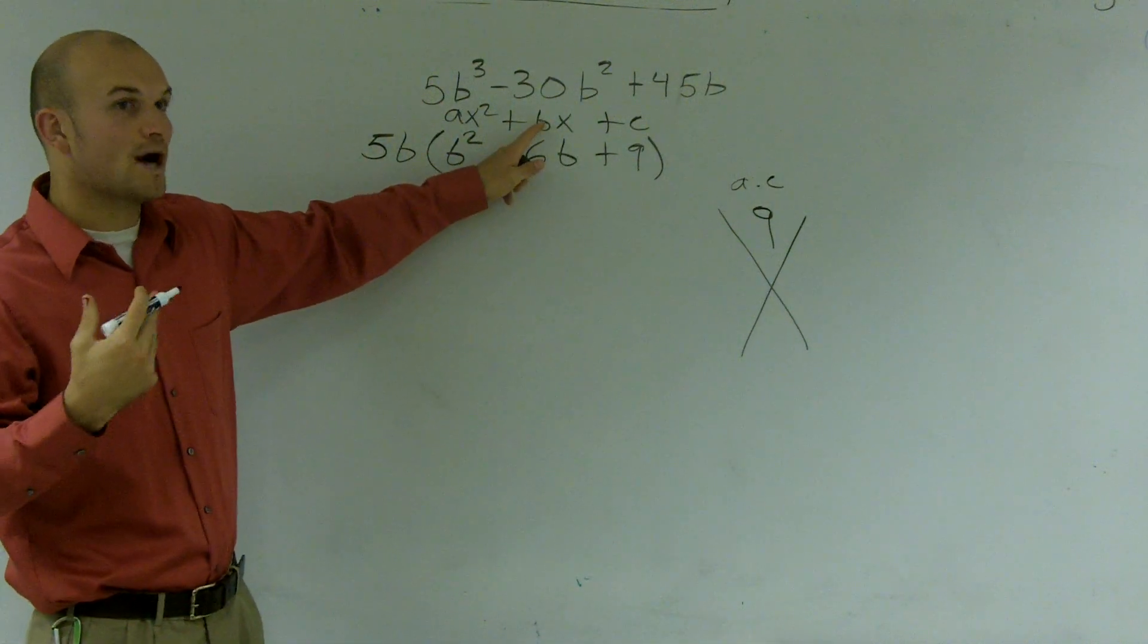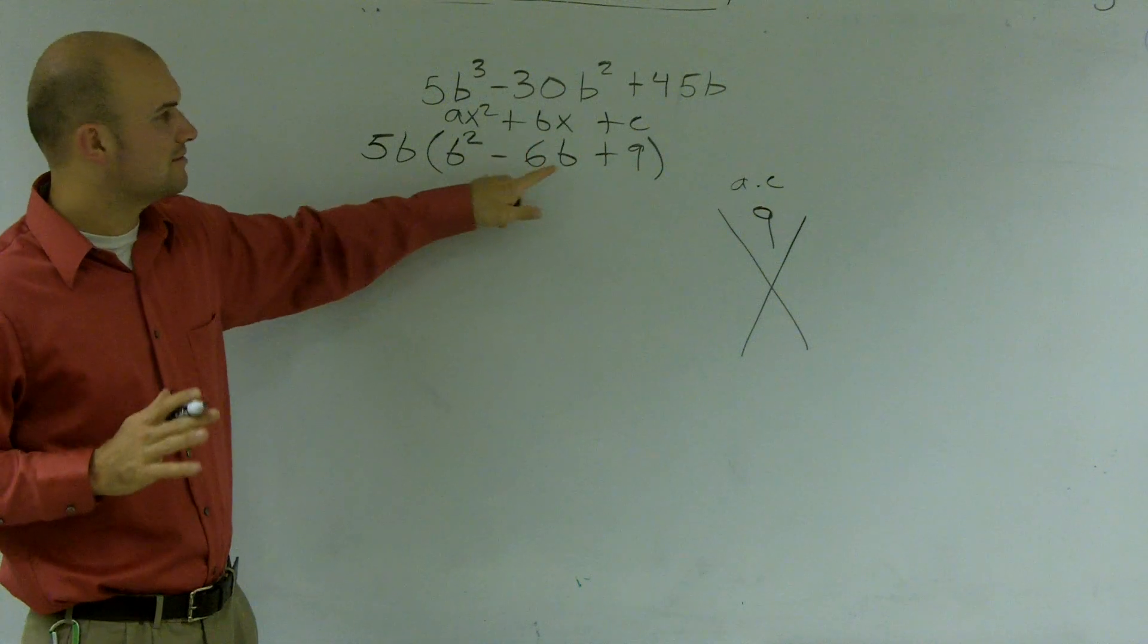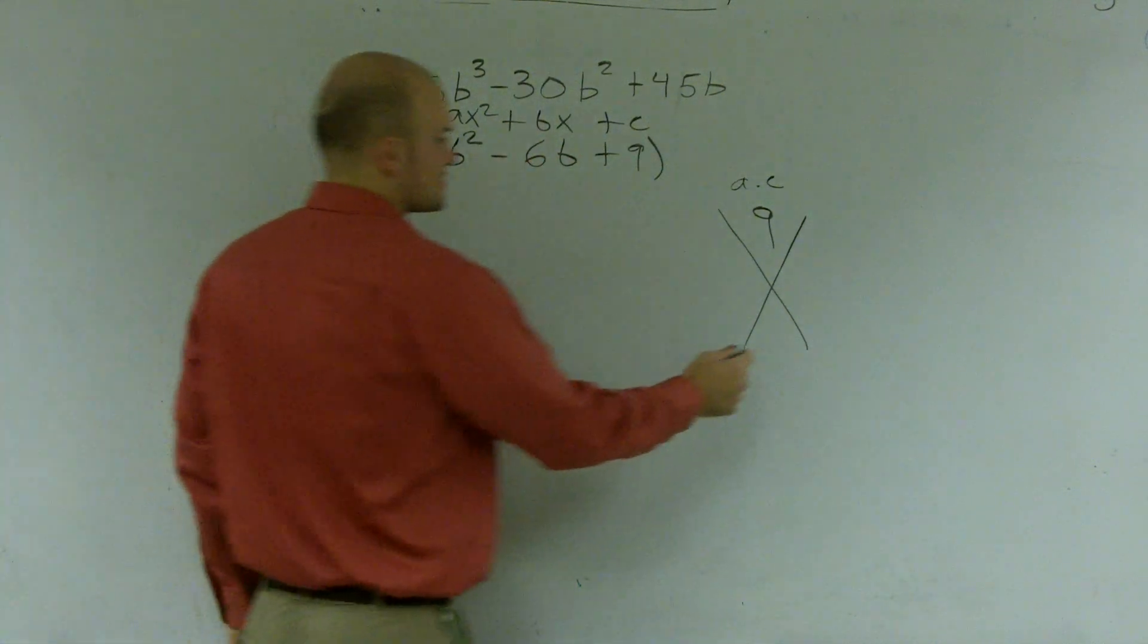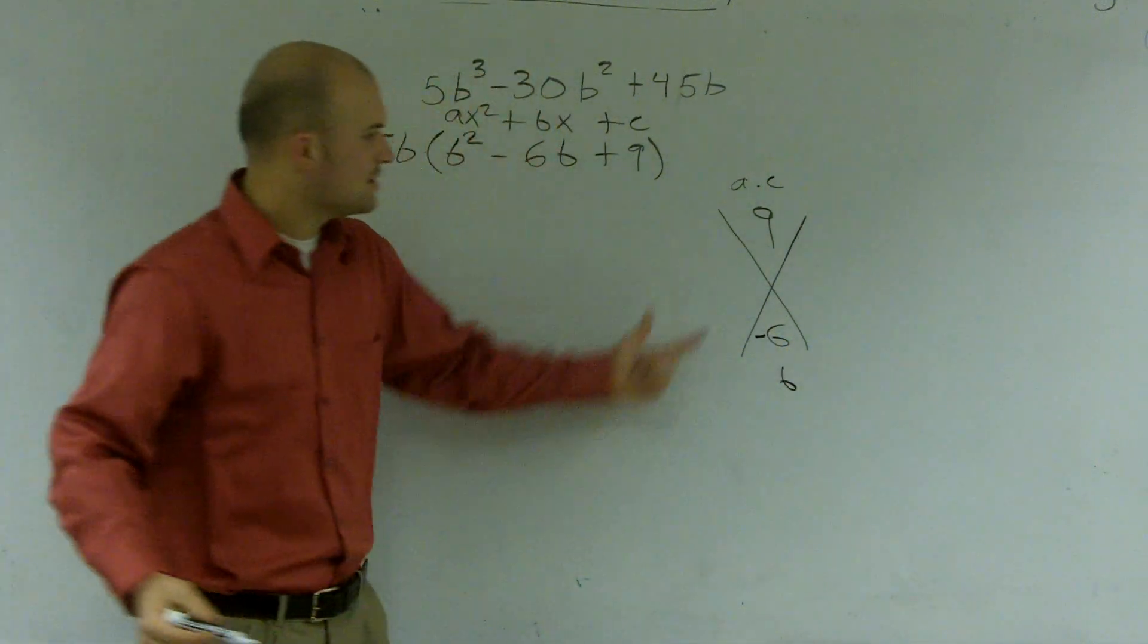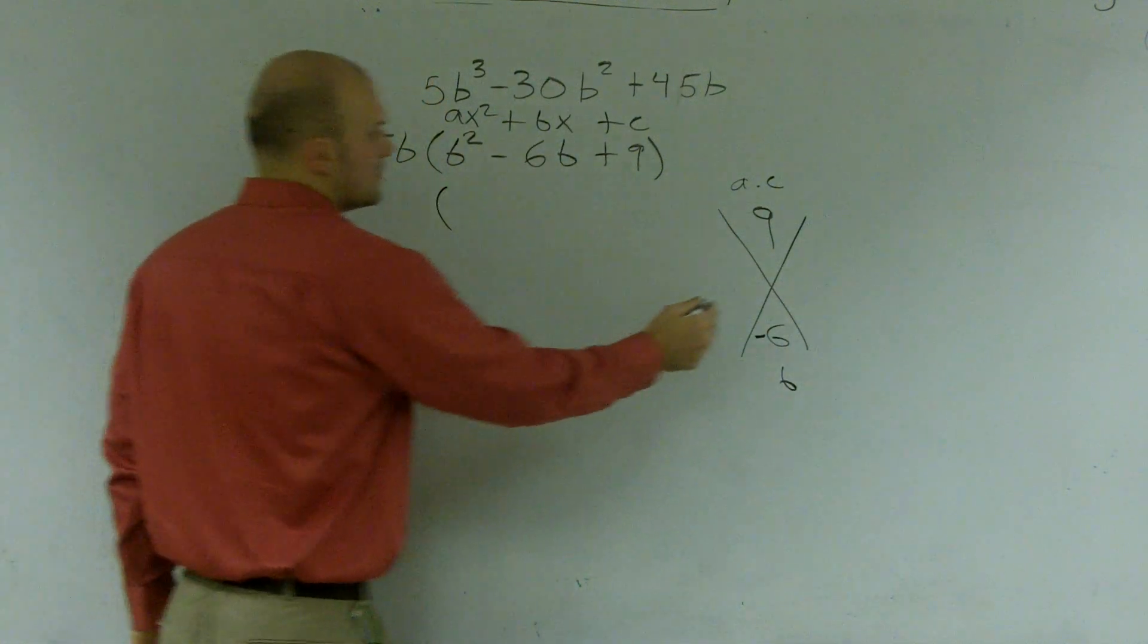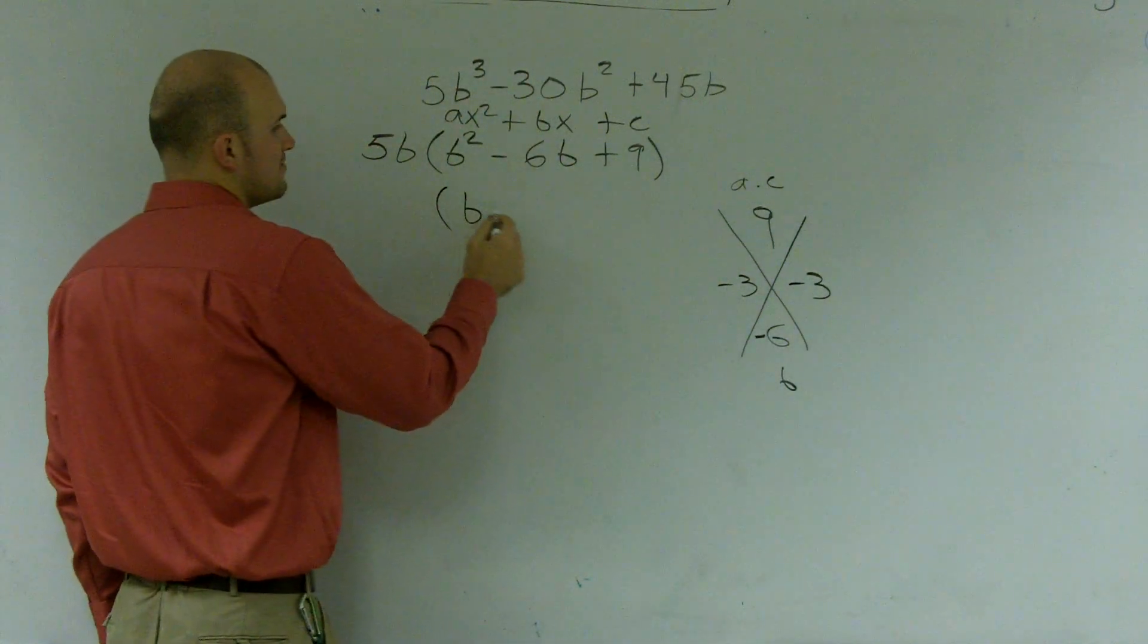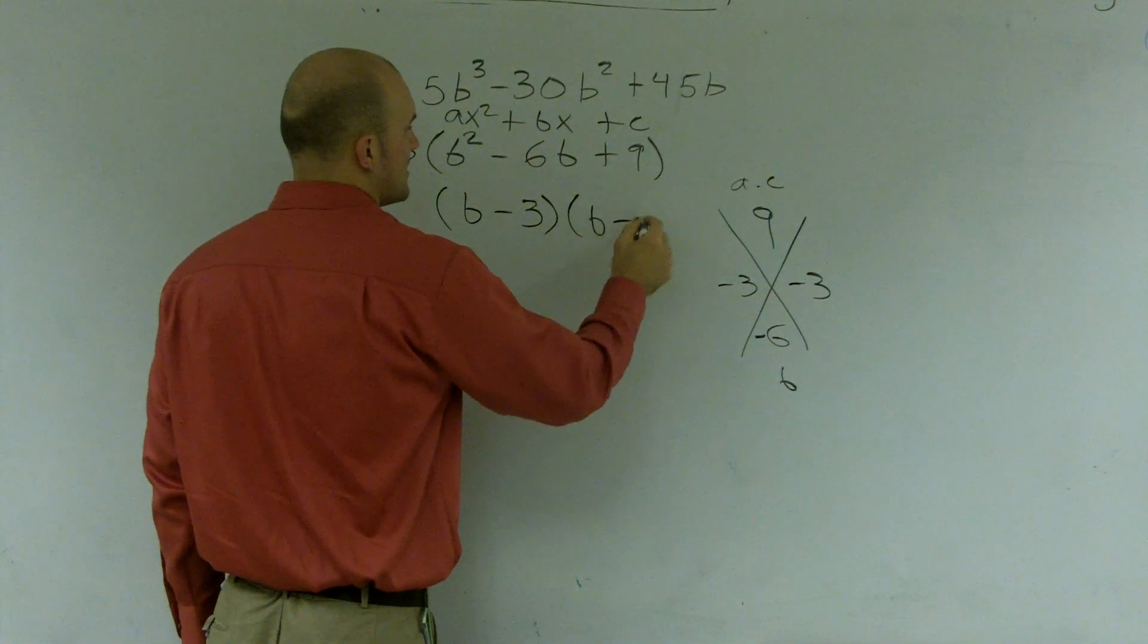And then my b for the quadratic - I know my variable in this problem is b, but we usually use x - but my b coefficient here is negative 6. So I ask myself: what two numbers multiply to give me 9, but add to give me negative 6? That would be negative 3 and negative 3. So I can say b minus 3 times b minus 3.